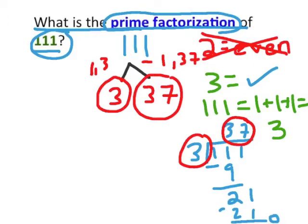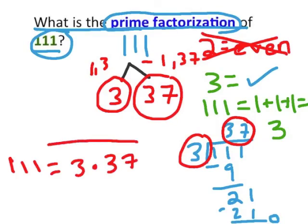So, 37 is a prime number. So, using prime factorization, 111 is equivalent to 3 times 37. That is our answer.